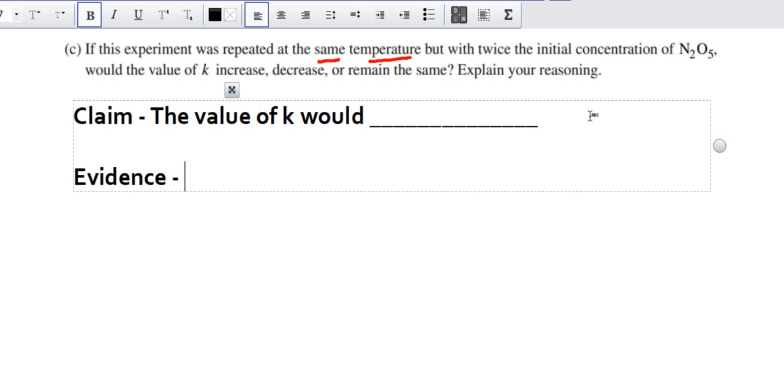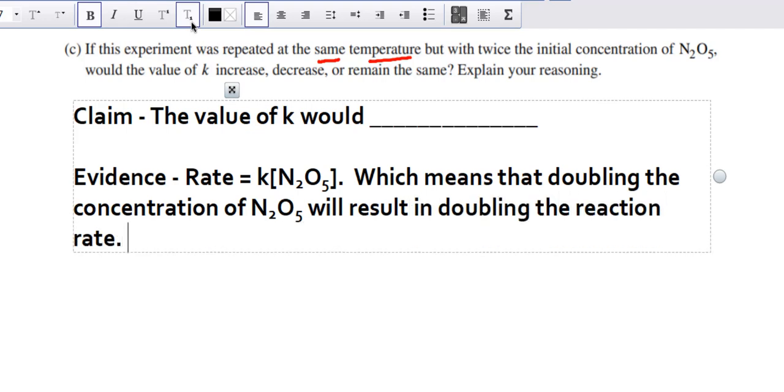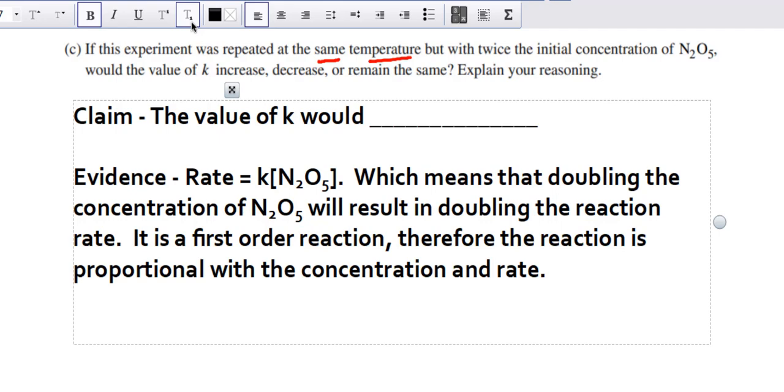What is my evidence? Think about the rate law. Rate equals k times N2O5 to the first power, which means that doubling the concentration of N2O5 will result in doubling the reaction rate. It is a first order reaction, therefore the reaction is proportional with the concentration and rate. The reason is that k is therefore independent of the concentration changing.